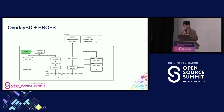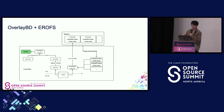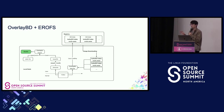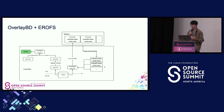Overlay BD is a user-space service running as a daemon that utilizes the TCMU model provided by the kernel. It provides a virtual device that users can mount, and all I/O requests to this device are redirected back to the Overlay BD service running in the background, which can do anything you want with it. Overlay BD provides lazy loading functionality — instead of fetching all the data from the registry, it lazy-loads when an I/O request comes in, fetching the corresponding chunk from the registry. After including Overlay BD in our solution, we solve the first problem: instead of having one device per layer, we can have only one device per container or image.